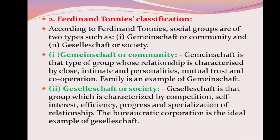Second, Ferdinand Tönnies' classification. He classified social groups as Gemeinschaft (community) and Gesellschaft (society). Community group means whose relationship is characterized by close, intimate personalities, mutual trust, and cooperation — family is an example. The society group is characterized by competition, self-interest, efficiency, progress, and specialization of relationships — bureaucratic organizations are the ideal example.